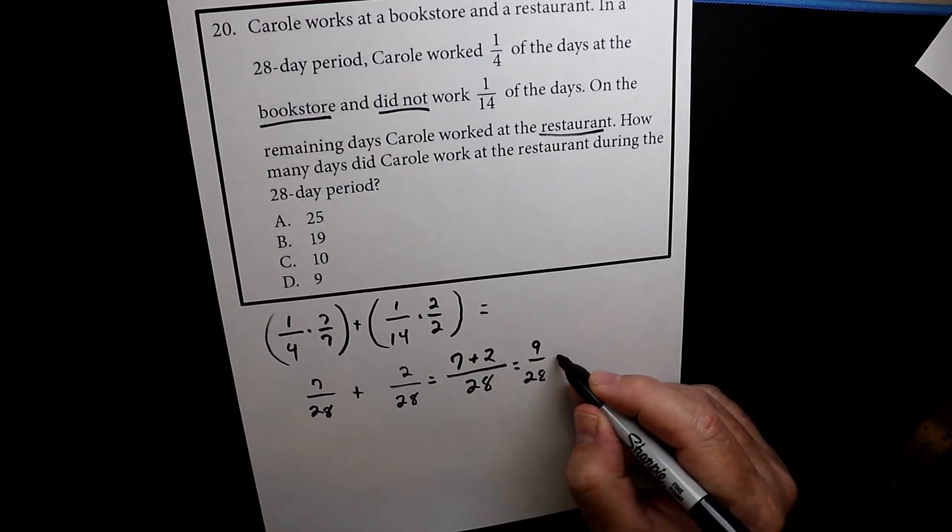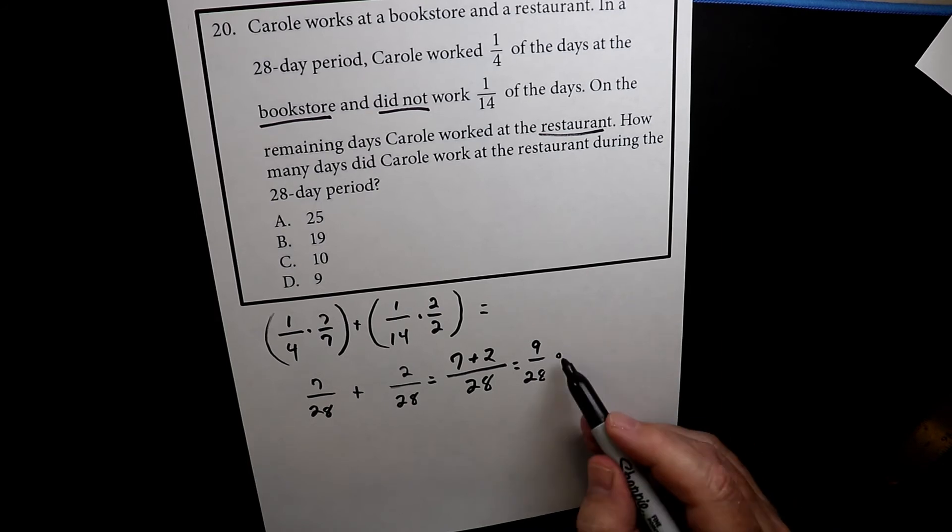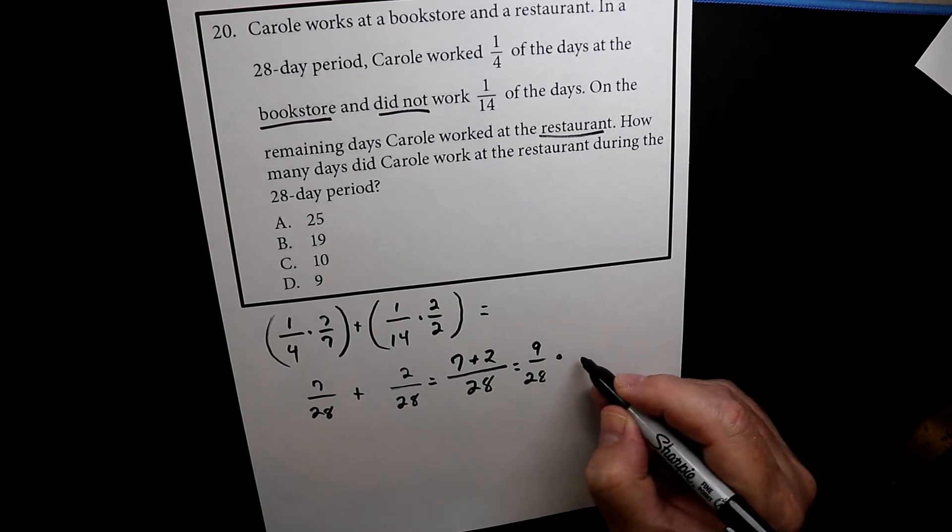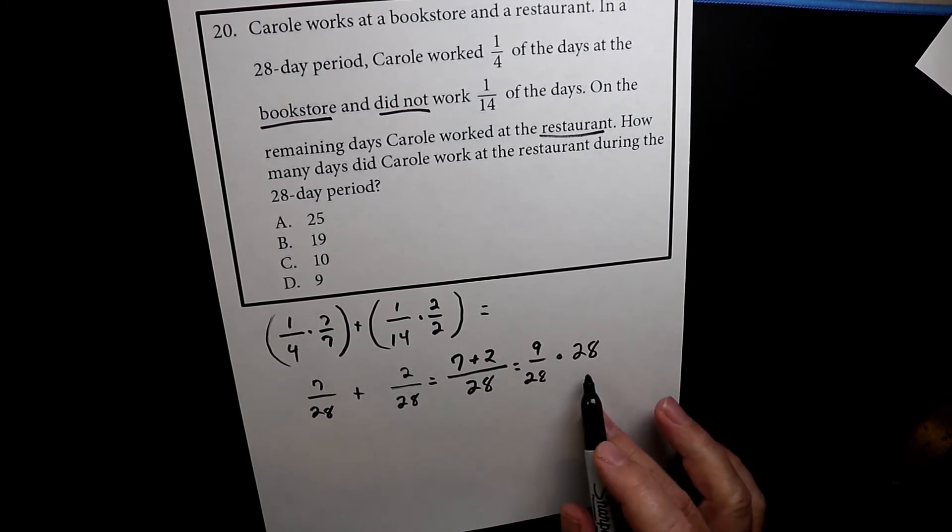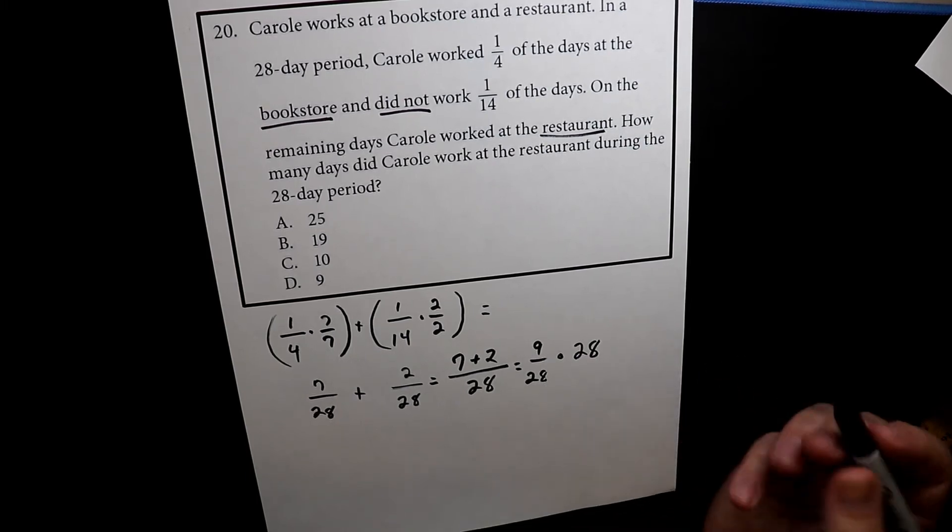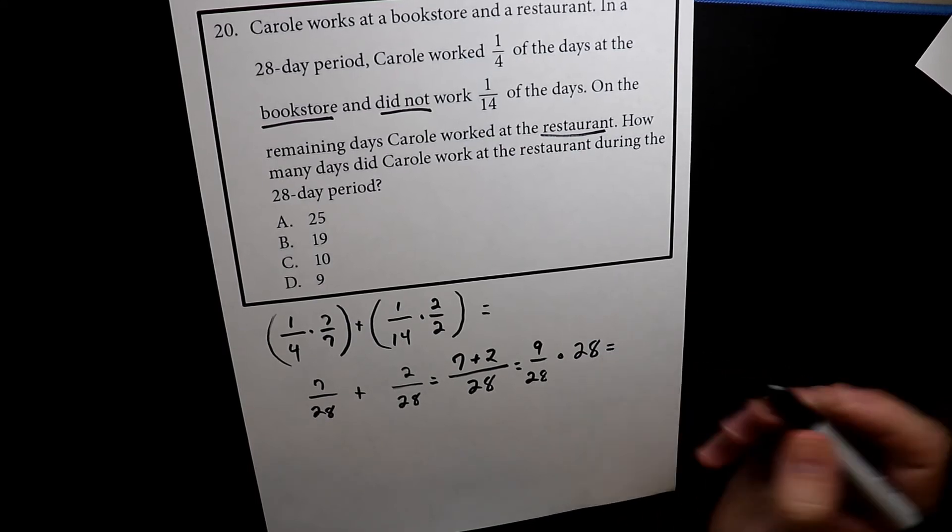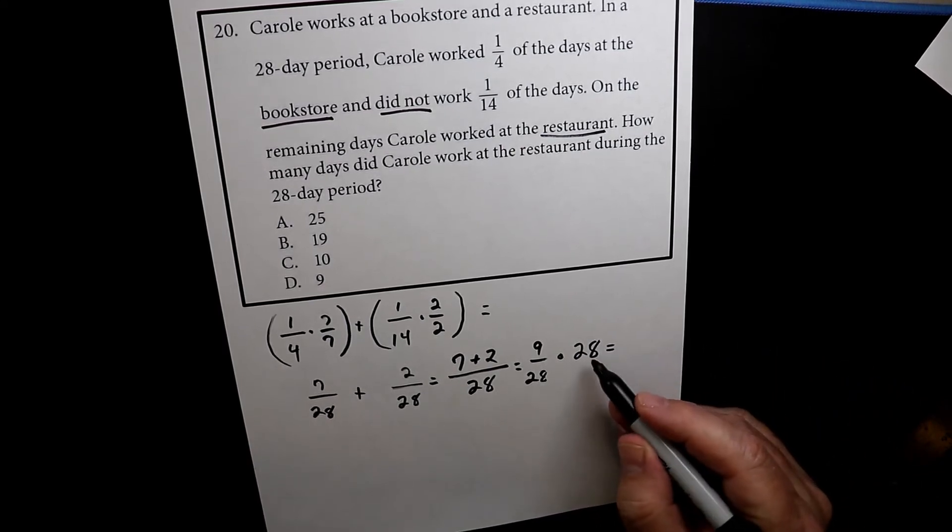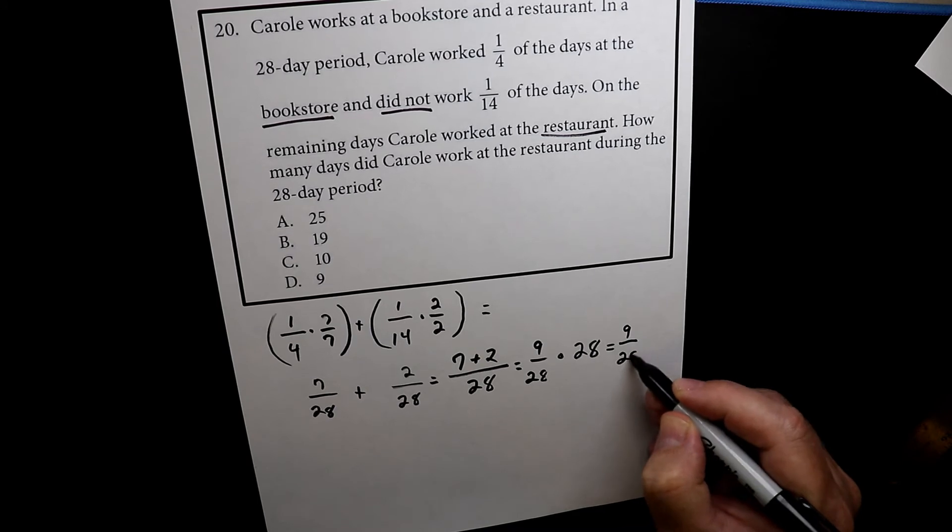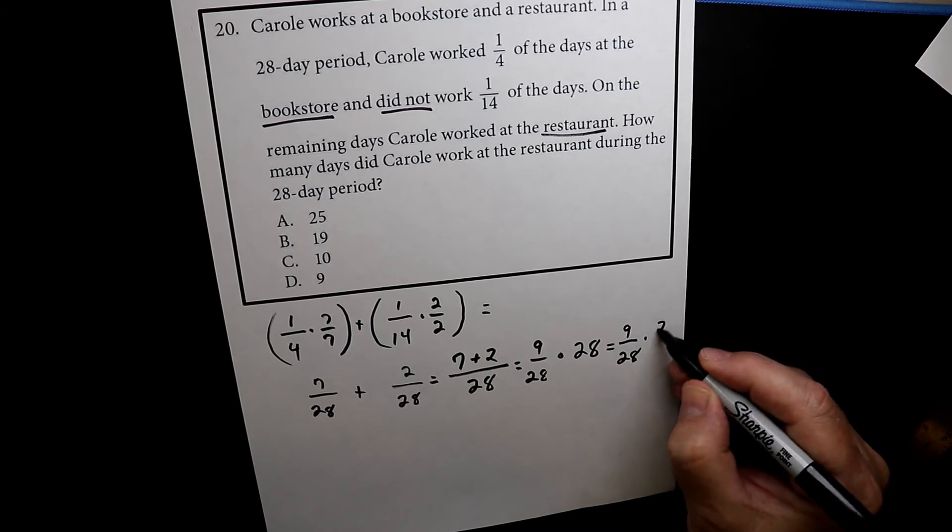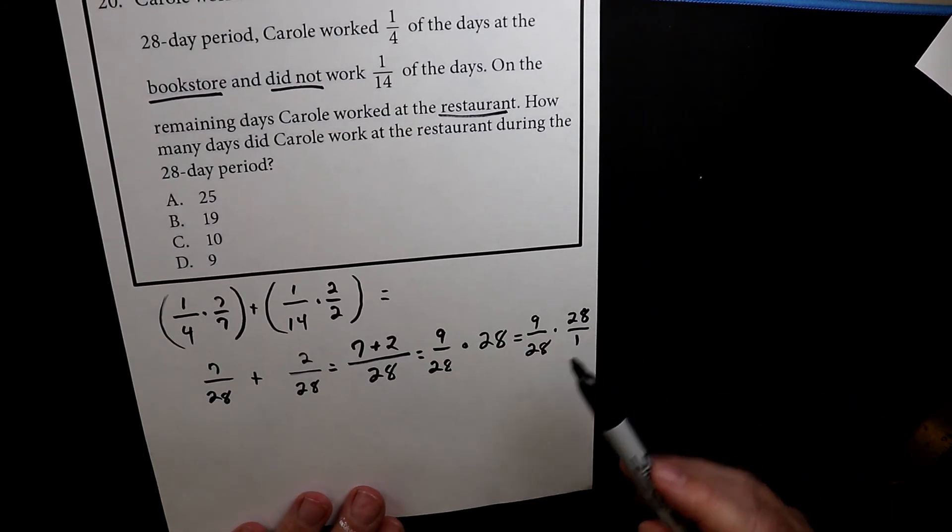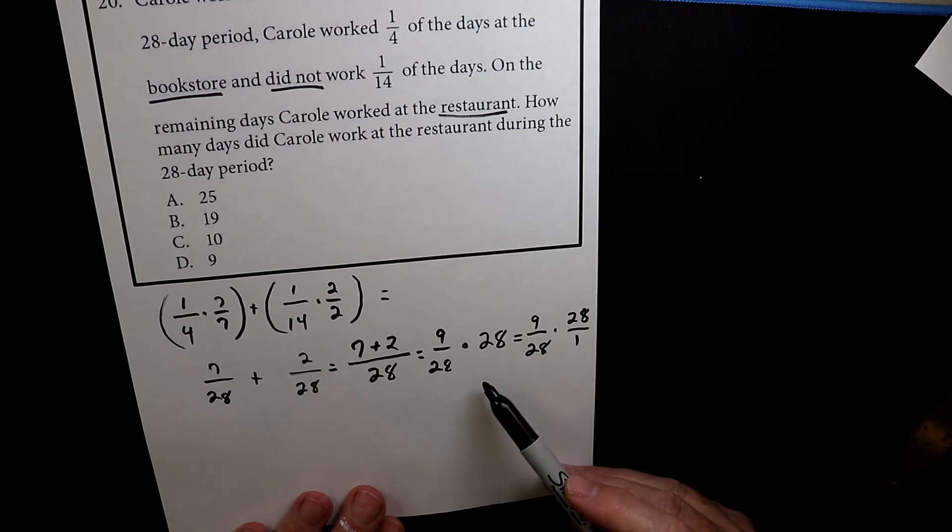So if we want to do that, we want to take this and we want to see how many days she had off or at the bookstore. So we're going to multiply this by 28. So there's 28 days, nine 28ths of these, she was out. Hopefully you remember that 28 over the 28 is the same thing as 28 over one.